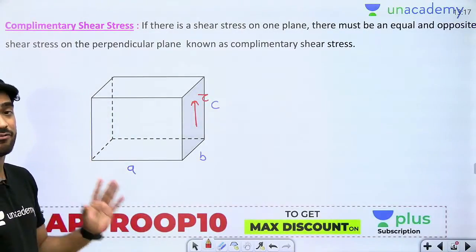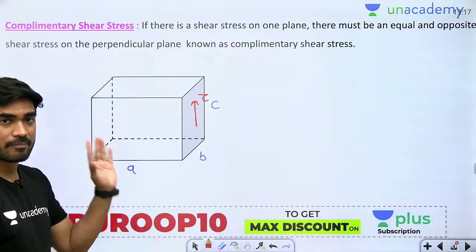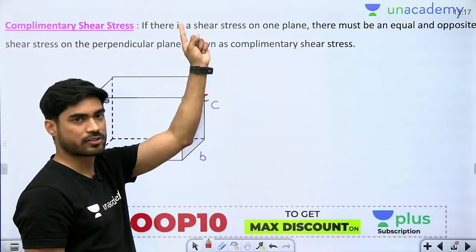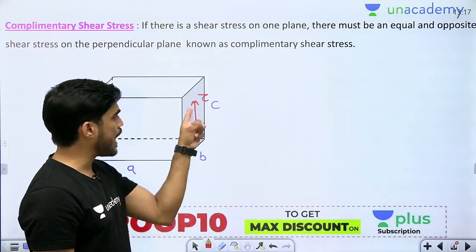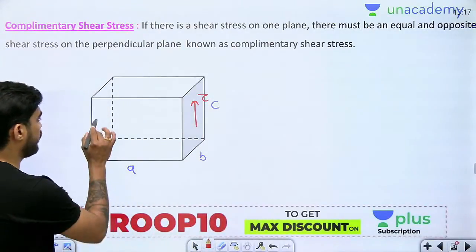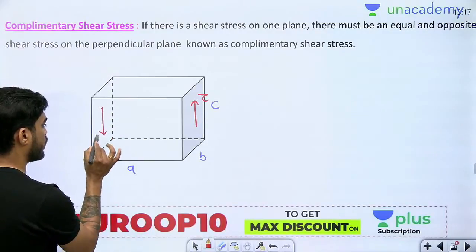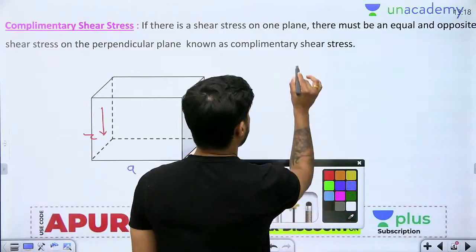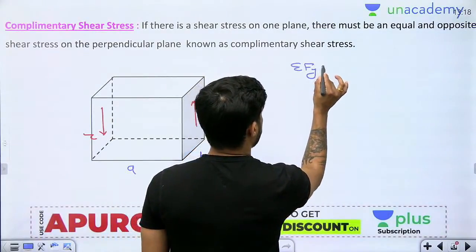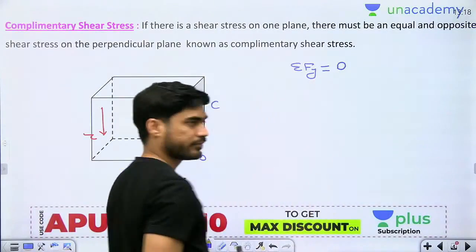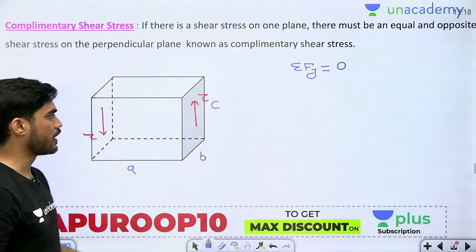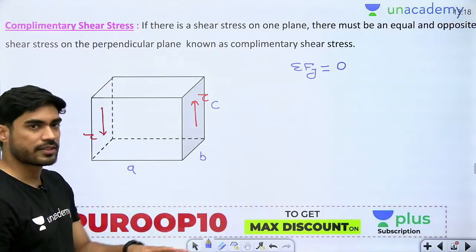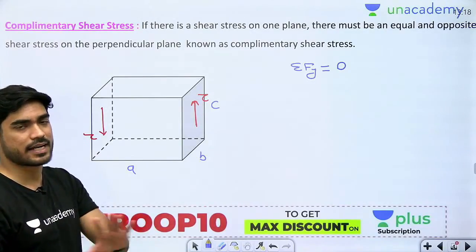Net force must be zero — summation of F must be zero. Right now, there is an upward force on the right side plane. So, in order to balance this, there will be a downward force here. Summation of Fy is zero. To keep summation of Fy equal to zero, if an upward tau is acting, then there will be a downward tau here as well.